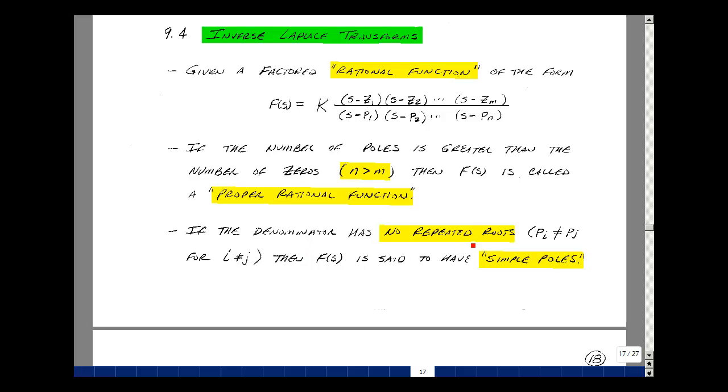If the denominator has no repeated roots, in other words p_i does not equal p_j, then f(s) is said to have simple poles.